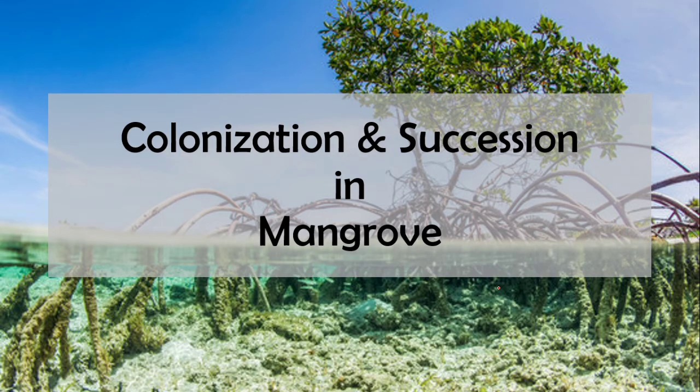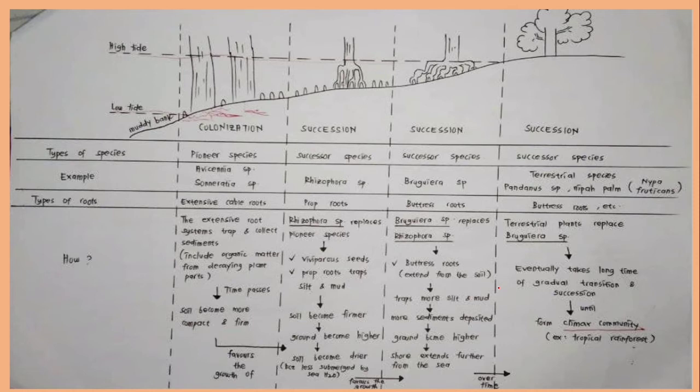Are you ready for colonization and successions in different ecosystems? So we start with colonization and successions in mangrove. Start with the colonization and then replaced by process successions until we get climax community, a balanced community.